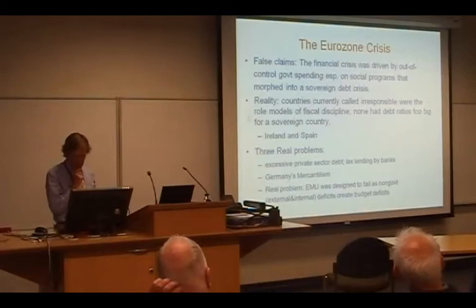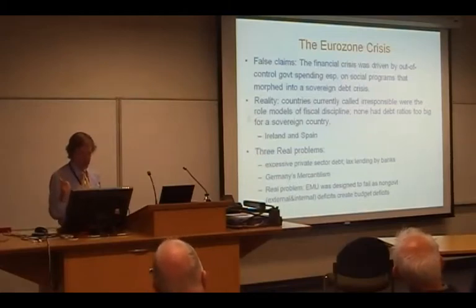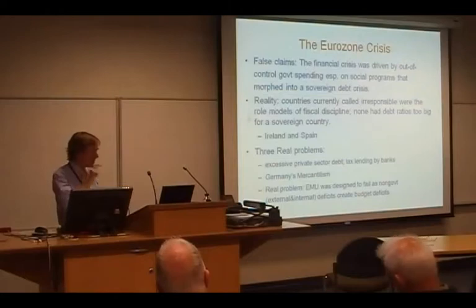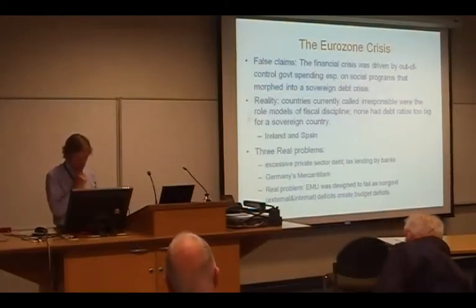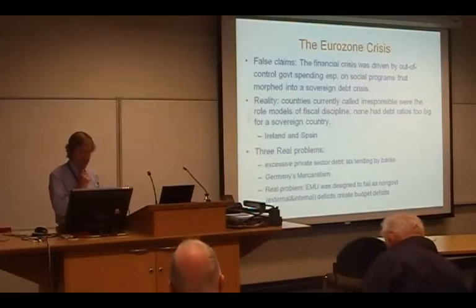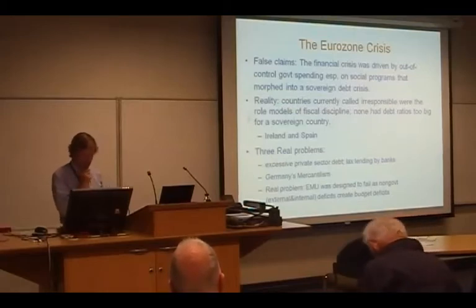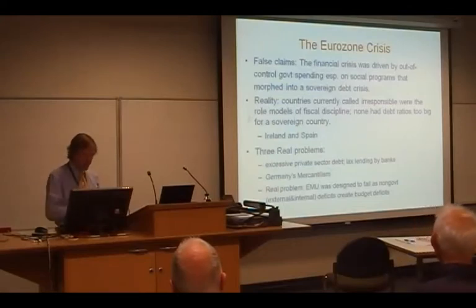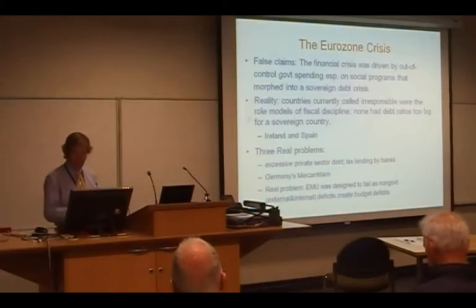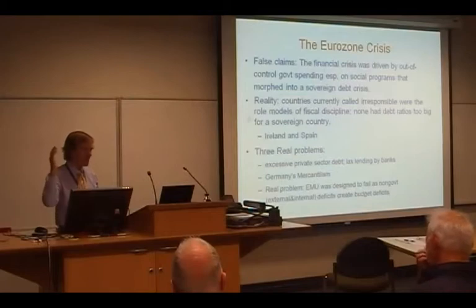The three real problems are: excessive private sector debt and lax lending by banks — exactly the same problem as in the US — throughout Europe; Germany's mercantilist insistence that it will run current account surpluses; and finally, the real problem is that the EMU was designed to fail. It could not succeed. I was arguing this in 1998 that it would fail — you could foresee it very easily.